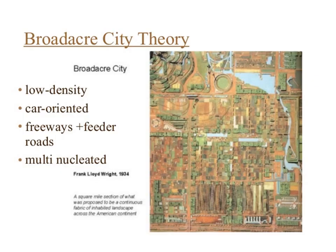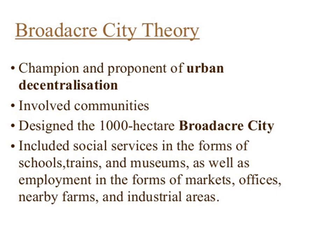The next theory is the broad-acre city theory. The highlight points are low-density, car-oriented, freeways plus feeder roads, and the multi-nuclei concept. In the broad-acre city, the environment of communities is designed for 1,000 hectares. It includes social services in the form of schools, trains and museums, as well as employment in the form of markets, offices, nearby firms and industrial areas.